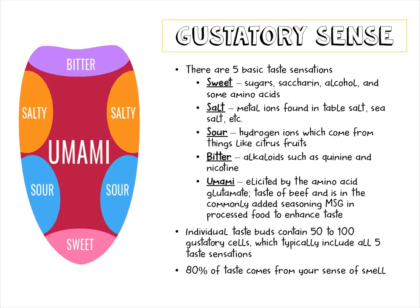There are five basic taste sensations. Sweet, which detects sugars, saccharin, alcohol, and some amino acids. Salt, which tastes metal ions found in table salt or sea salt. Sour, which detects hydrogen ions from things like citrus fruits or sour candies. Bitter, which detects alkaloids such as quinine and nicotine. And umami, which is elicited by the amino acid glutamate — it tastes of beef and is commonly added to seasonings like MSG in processed foods to enhance taste, since processing at high heat can eliminate natural flavors.